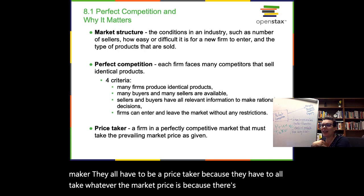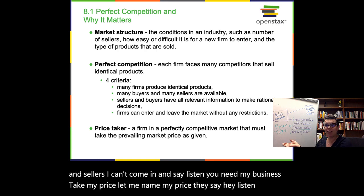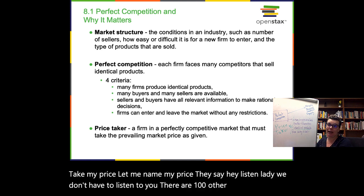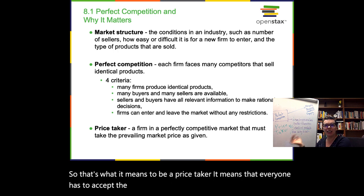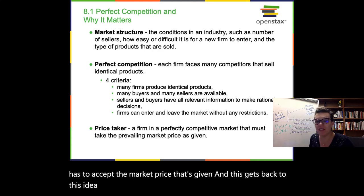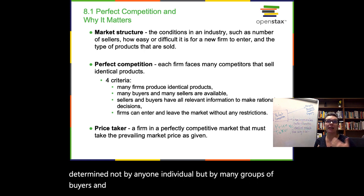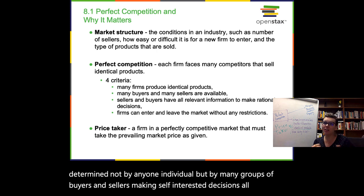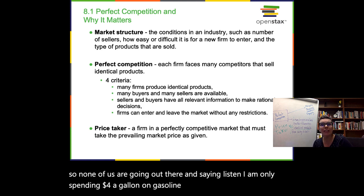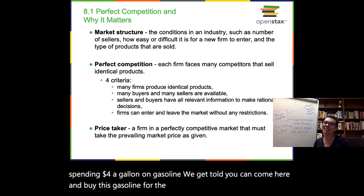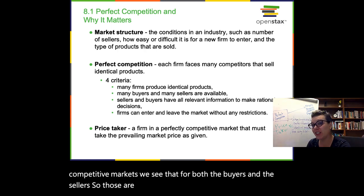In a perfectly competitive market with lots of buyers, sellers, identical products, and free entry and exit, no one gets to be a price maker — they all have to be price takers. Because there are lots of buyers and sellers, you can't name your price; they'll say there are 100 other people coming to buy. This connects back to Adam Smith's invisible hand: prices are determined not by any one individual, but by many groups of buyers and sellers making self-interested decisions all at once.